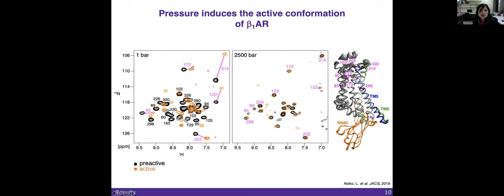To better understand what's happening, we compare the pre-active state and the active state at one bar and 2,500 bar. What's astonishing is to compare both at 2,500 bar, and here we see that both spectrums are basically the same, they're almost identical, meaning that the receptor in the pre-active state can go to the fully active state by only applying pressure, even without any intracellular partner. This is the first time someone showed that GPCRs can be activated without a G-protein or nanobody.